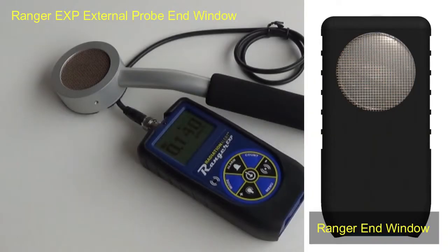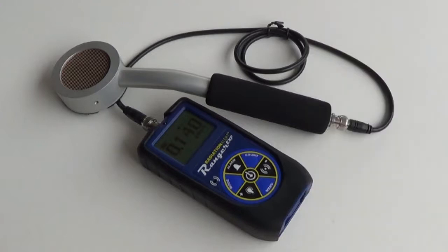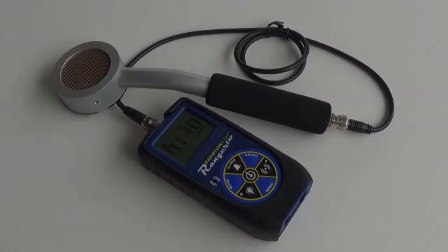Unlike the Ranger, whose alpha end window is located on the back of the base unit, the detector of the Ranger EXP is housed on an external probe handle with a 3-foot cable.